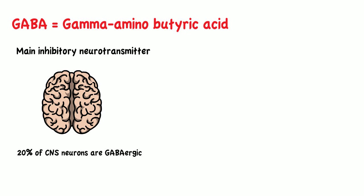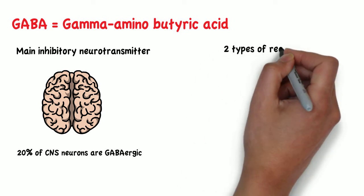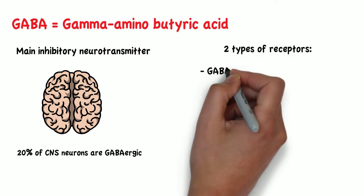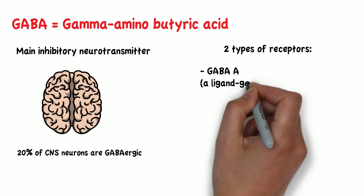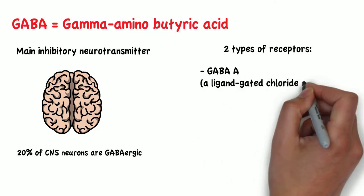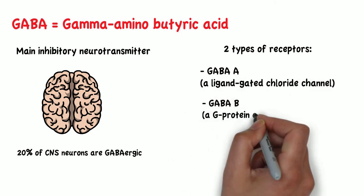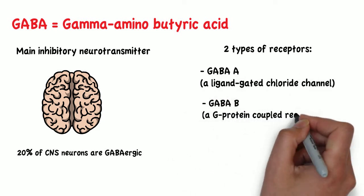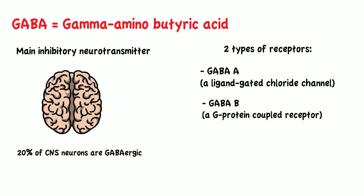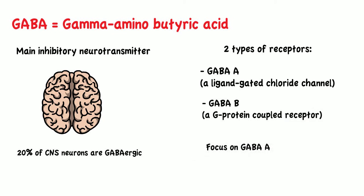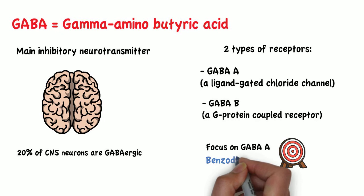GABA acts on two different receptors: GABA-A, which is a ligand-gated chloride channel, and GABA-B, a G-protein coupled receptor. We will focus on GABA-A receptors because that is the target of benzodiazepines.